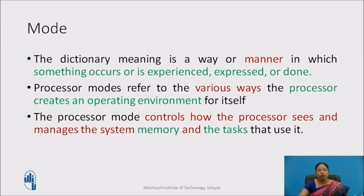What is a mode? The dictionary meaning of mode is: it is a way or manner in which something occurs or is experienced, expressed, or done. Processor mode refers to the various ways the processor creates an operating environment for itself. Processor mode controls how the processor sees and manages the system memory and the tasks that use it. In different modes, different processor system memory access and tasks are going to be changed.